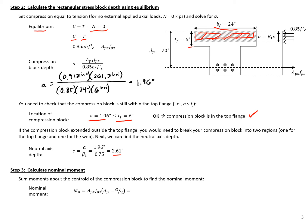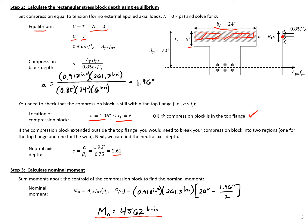Finally, we can calculate our nominal moment. We're going to sum our moments about the centroid of our compression block. So our tension force equals the area of prestressing — 0.918 square inches — times the stress in the strand at ultimate — 261.3 ksi — times our lever arm, which will be 20 inches (d sub p) minus A over 2, or 1.96 divided by 2. This gives us Mn equal to 4,562 kip-inches.